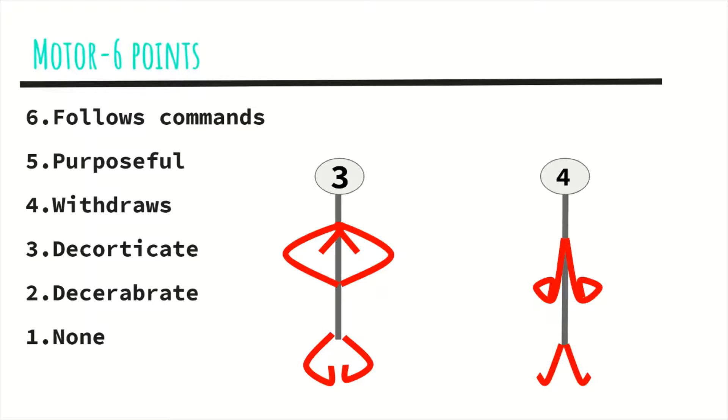And then next, for five points, is purposeful movement, which means that if you provide a painful stimuli the patient will reach towards the side of the stimuli in an attempt to remove it. So let's say you give a sternal rub and they then reach for their chest, then they would receive a five in this section for being purposeful.